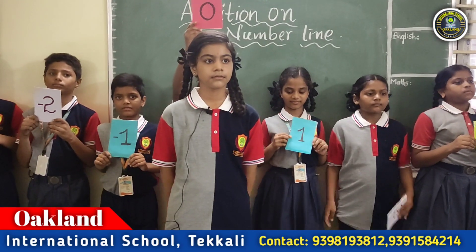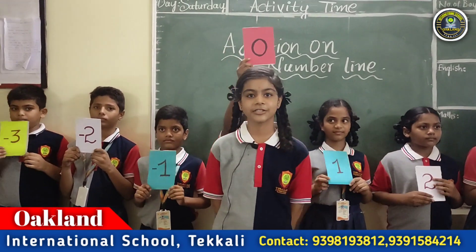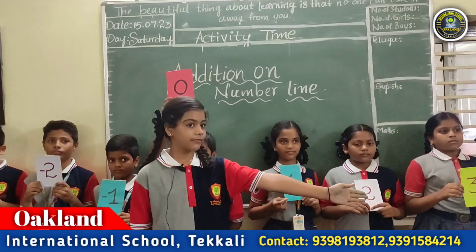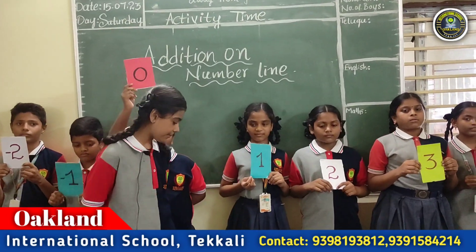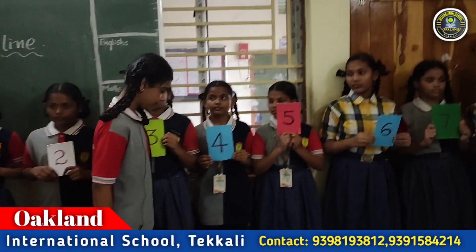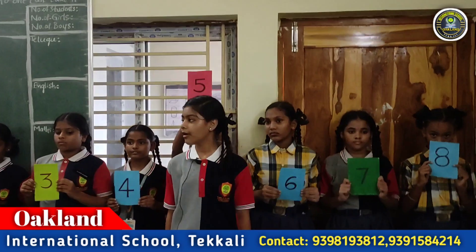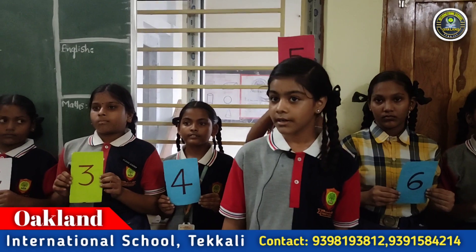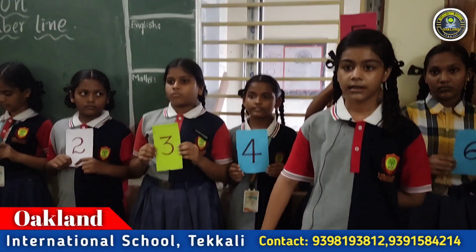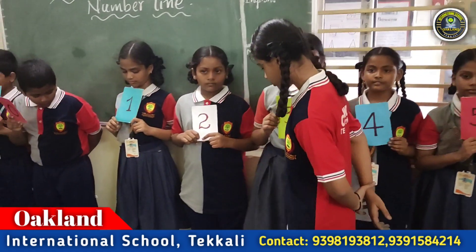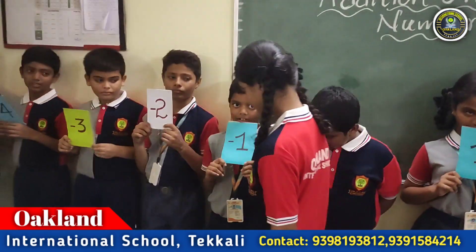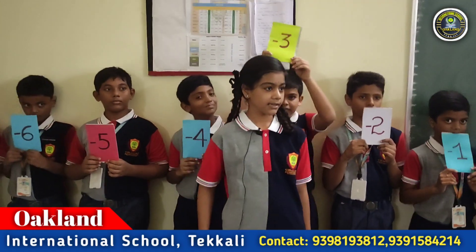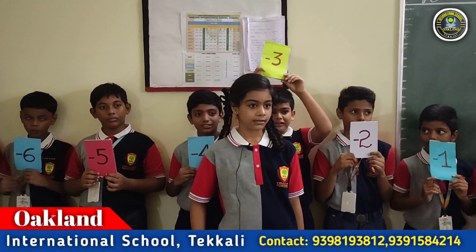Five plus minus eight. Where I am standing, that is zero position. We have to move right side five steps on the number line. One, two, three, four, five. Now I reach plus five. We have to move eight steps left side on the number line. One, two, three, four, five, six, seven, eight. So the answer is minus three.